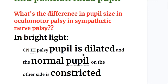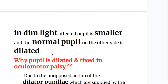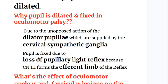In oculomotor palsy, in bright light, the affected pupil is dilated and the normal pupil on the other side is constricted. In ocular sympathetic lesions, in dim light, the affected pupil is smaller and the normal pupil on the other side is dilated. The pupil is dilated and fixed in oculomotor palsy due to the unopposed action of the dilator pupillae, supplied by the cervical sympathetic ganglia, and fixed due to loss of the pupillary light reflex, as the oculomotor nerve forms the efferent limb of that reflex.